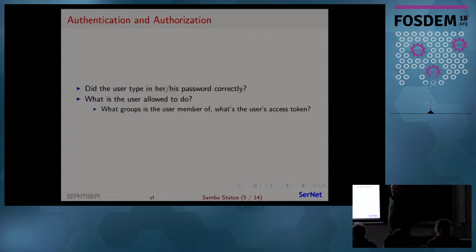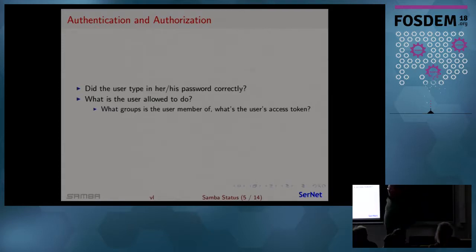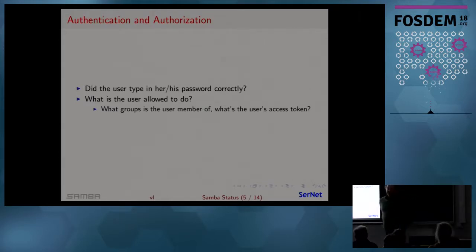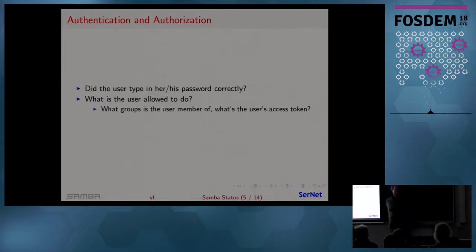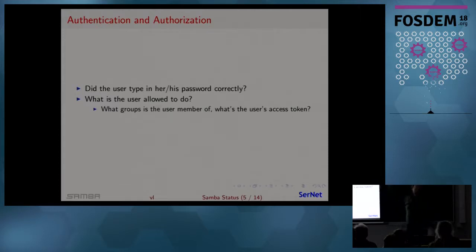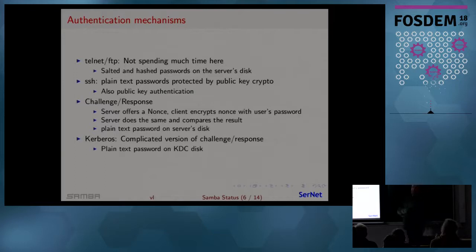What is authentication, what is authorization — we have to distinguish between those two. Authentication is mainly to identify users: did the user type in the password correctly, is the user really who they claim to be? Authorization is what the user is allowed to do. Active Directory specifies what a user is allowed to do mainly by listing groups a user is a member of — this is what we call the access token.